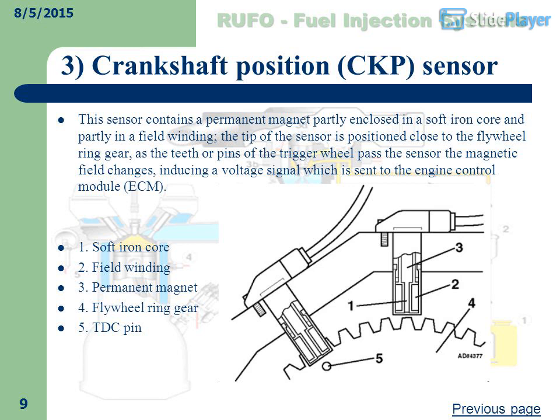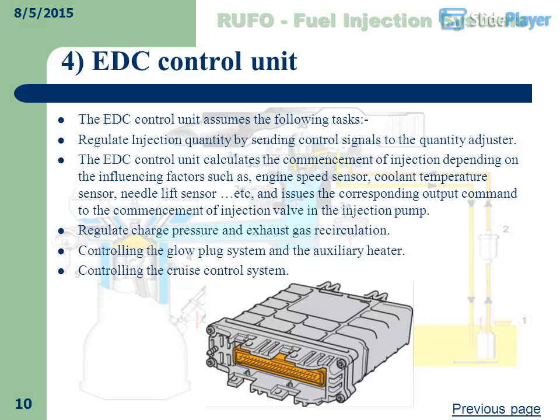CKP Sensor components include: soft iron core, field winding, permanent magnet, flywheel ring gear, and TDC pin.